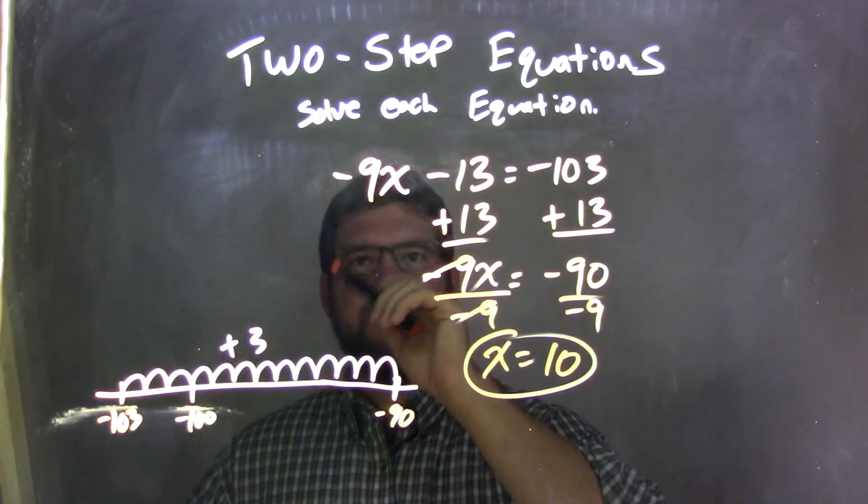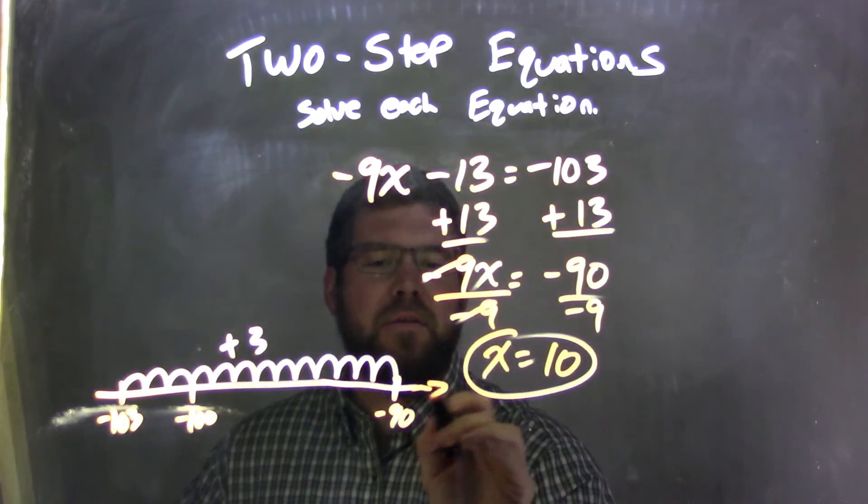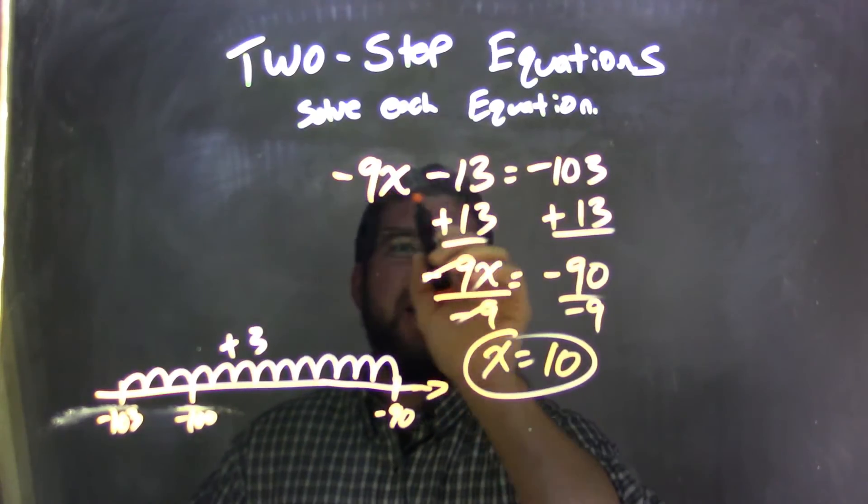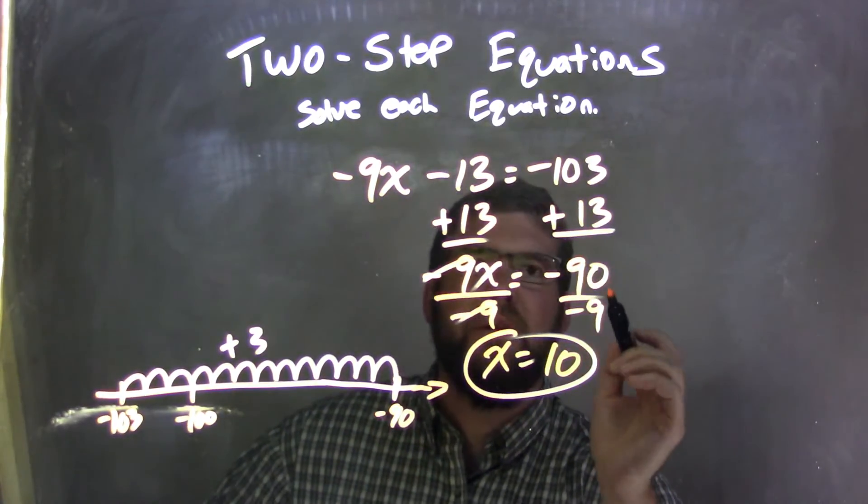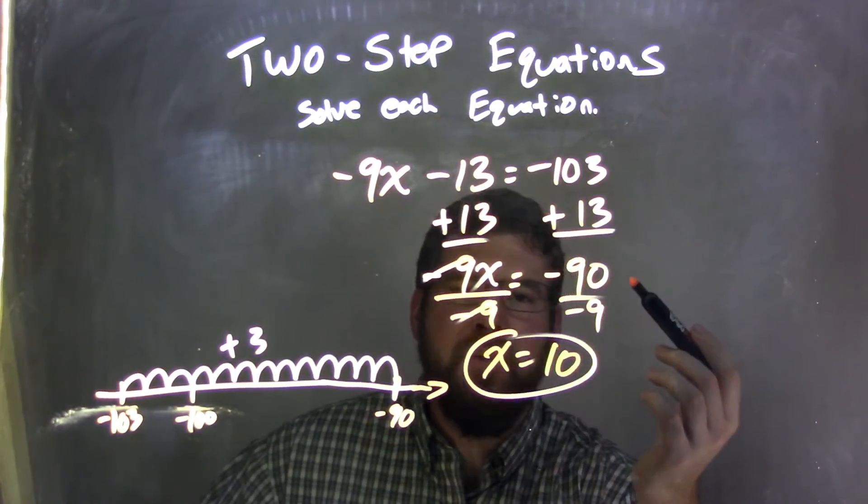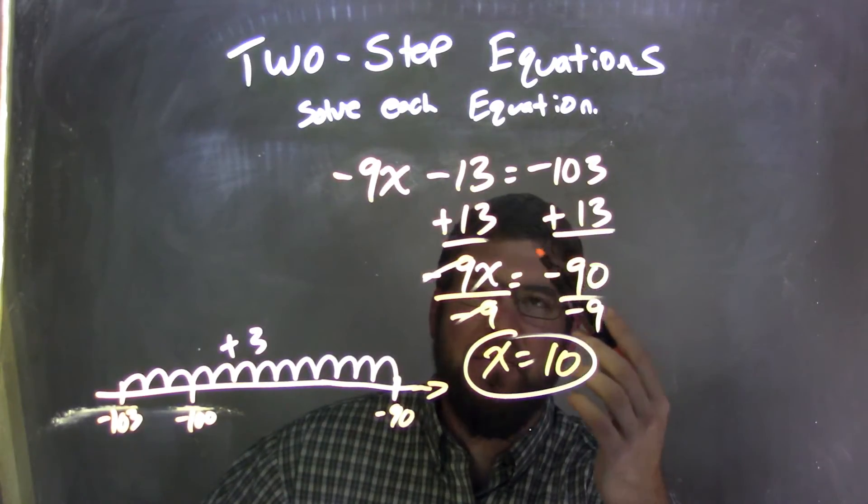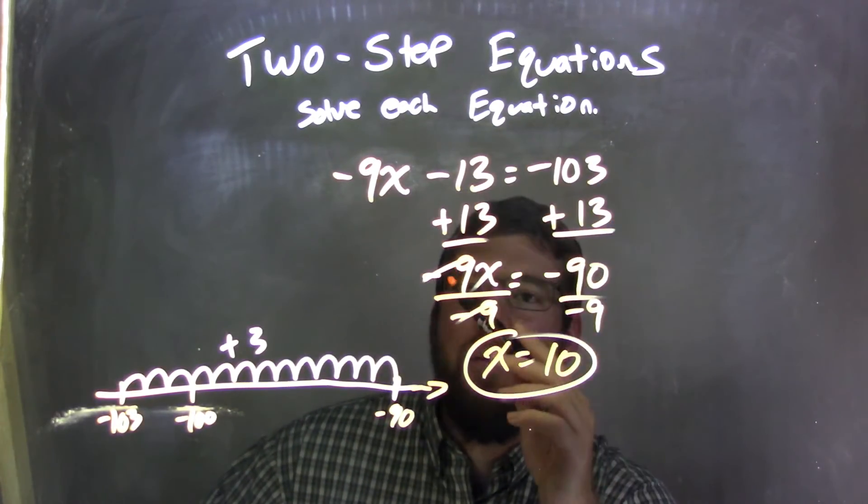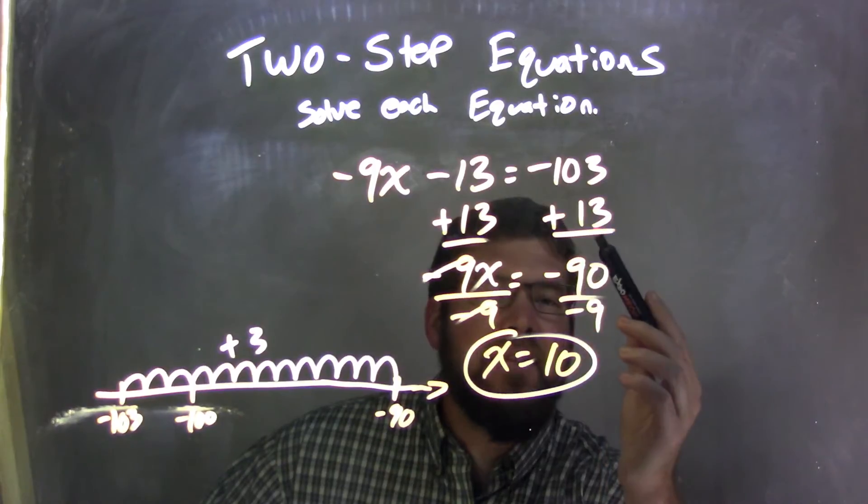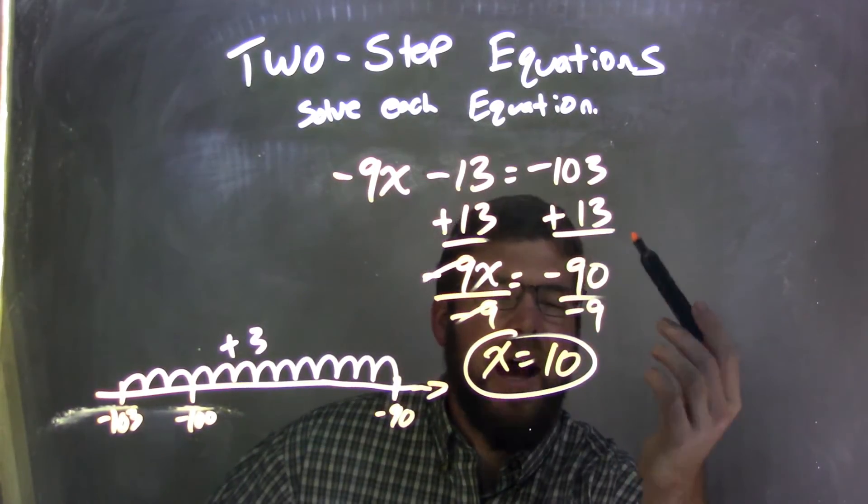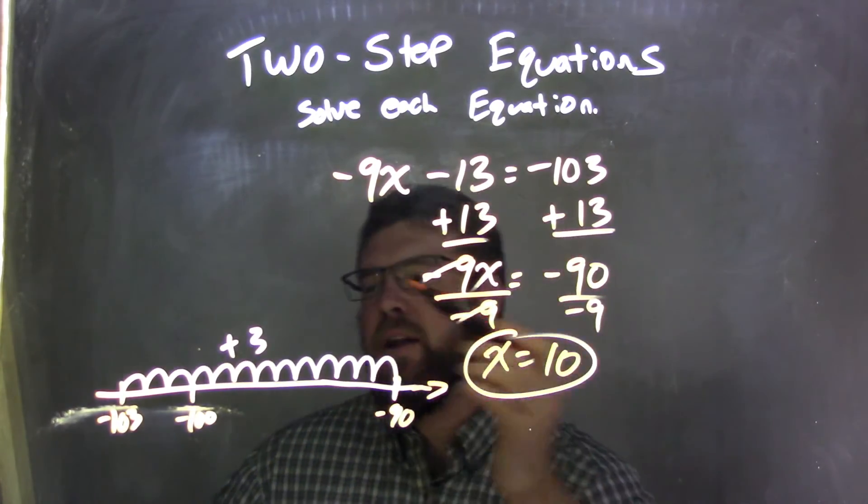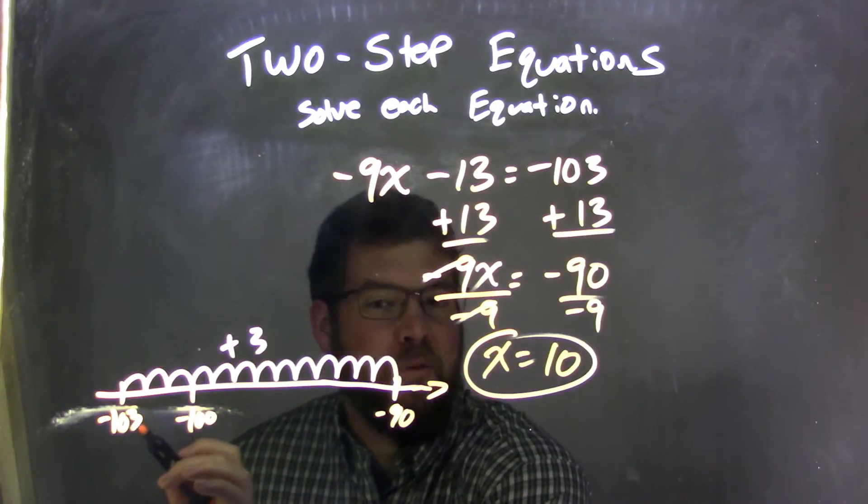So let's recap. We have negative 9x minus 13 equals negative 103. I added 13 to both sides because that was the opposite of that subtraction. So I added 13 here. I brought down negative 9x, and then I have negative 103 plus 13. I knew that's going to be negative 90, but if you need help, I went to the number line. Let's write negative 103, not negative 113 here.